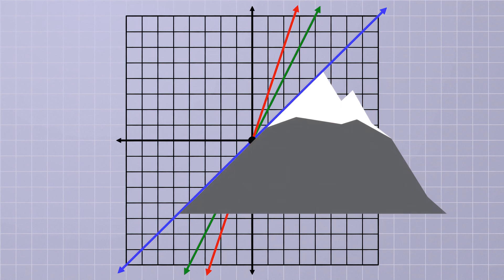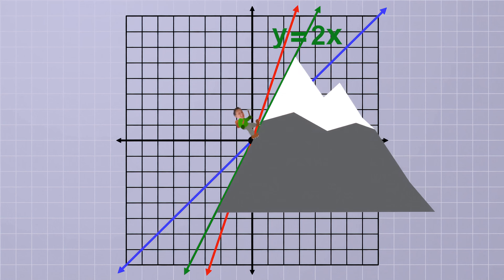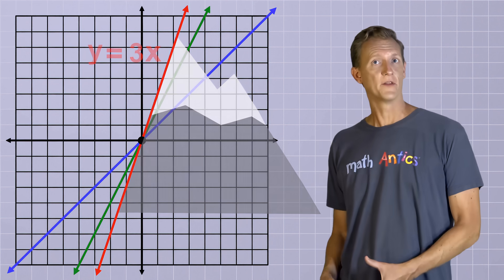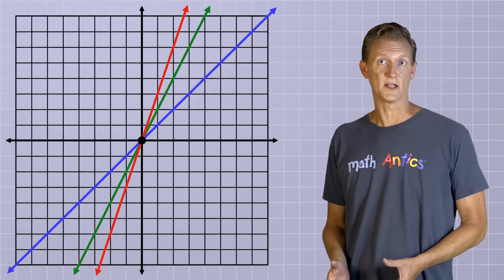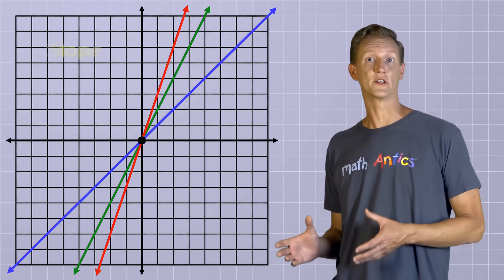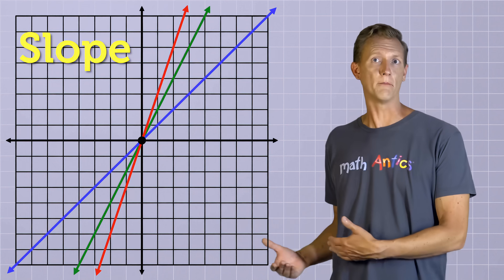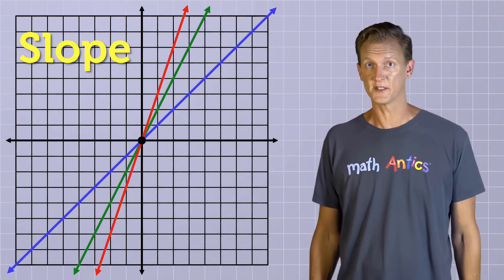Imagine that the line represents the side of a mountain or hill that you're climbing. y equals 1x would be a steep climb, but y equals 2x is steeper, and y equals 3x is even steeper than that. In math, the steepness of these lines is called their slope. As we choose bigger and bigger values for m, the slope of the line increases.